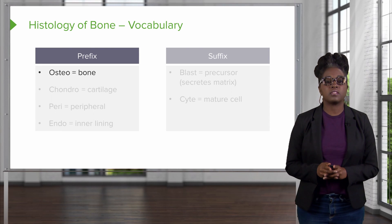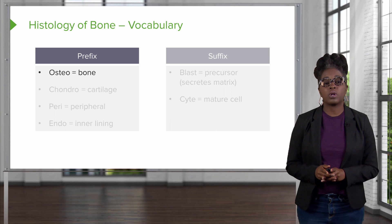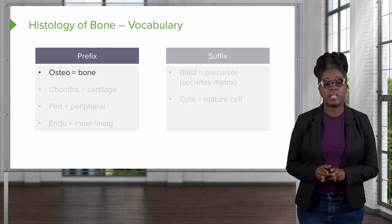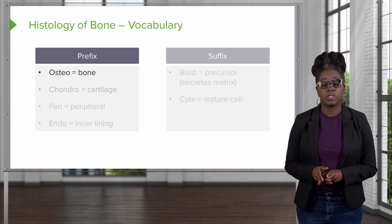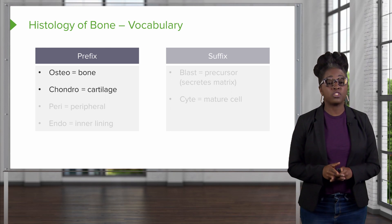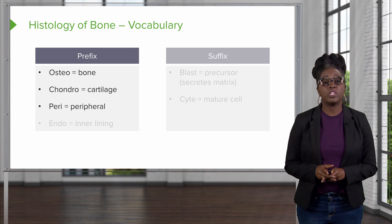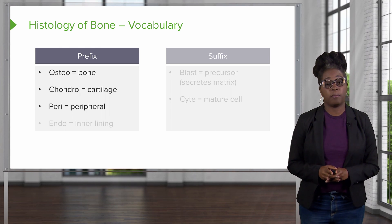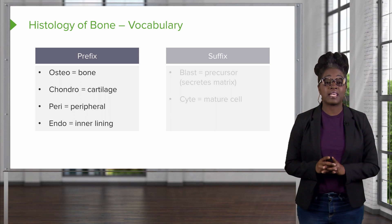Before we get started talking about the histology of the bone, I first want to go over a little bit of vocabulary that will help you navigate the following slides. When you see the term osteo, think bone. When you see the term chondro, think cartilage. When you see peri, think peripheral or the outside of the bone. And when you see endo, think inside of the bone.